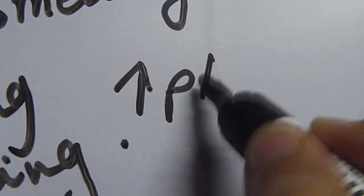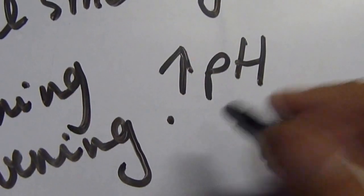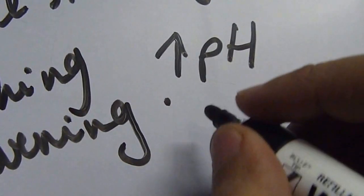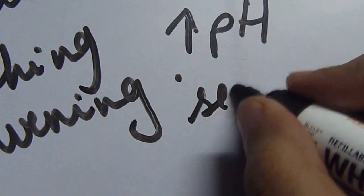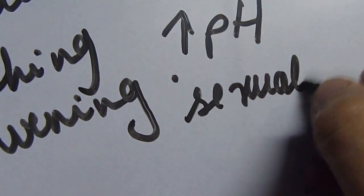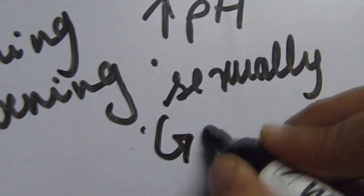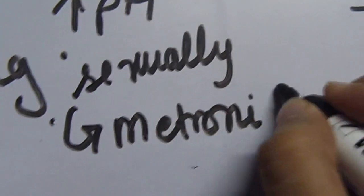Trichomonas vaginalis is also associated with an increase in pH. You treat both the partners whenever you have a Trichomonas infection because it's sexually transmitted, so you have probably given it to the other sexual partner. The treatment for Trichomonas vaginalis is metronidazole.